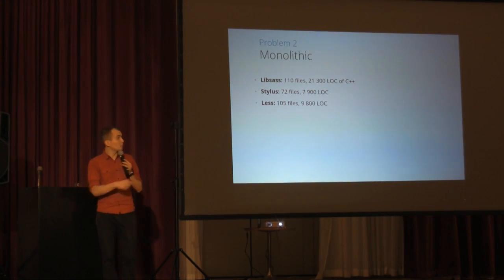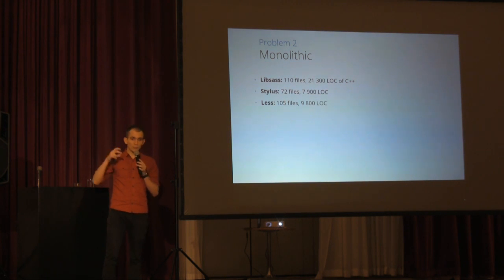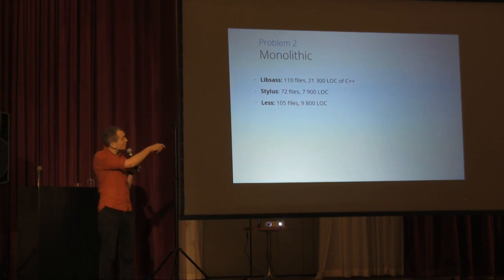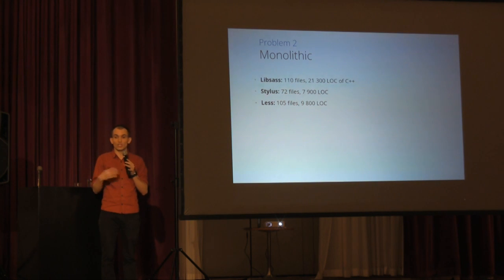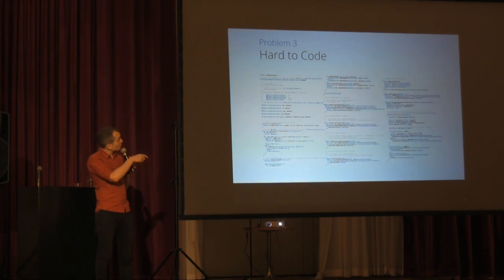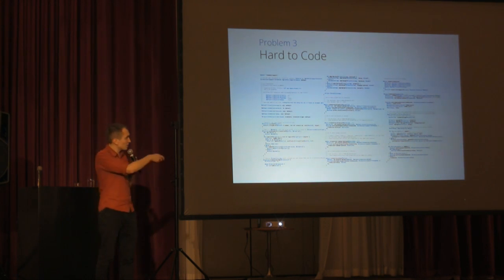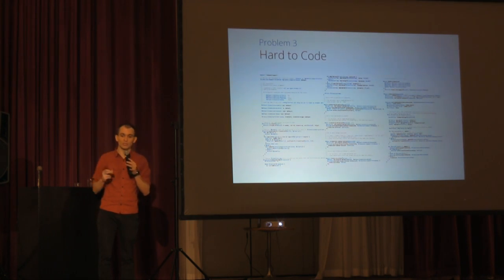This problem comes from the second problem: the preprocessor codebase is very huge and monolithic. It is very difficult to extend it, very difficult to fix something. The SASS team went even further — they rewrote the project in C++, and today we have even fewer developers able to change something. And the last problem is SASS itself. Can you see the code? Me neither. Because it is not creative work, it's not a big library — this is a simple file for the transition mixin in Compass. We need so many lines of code to implement one simple transition mixin. This is the problem with preprocessors, and this is why I created PostCSS.